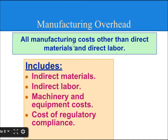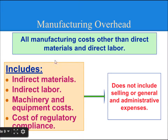Manufacturing Overhead includes all manufacturing costs other than Direct Materials and Direct Labour. It includes Indirect Material, Indirect Labour, Machinery and Equipment Cost, and Cost of Regulatory Compliances. Manufacturing Overhead does not include Selling or General Administrative Expenses.